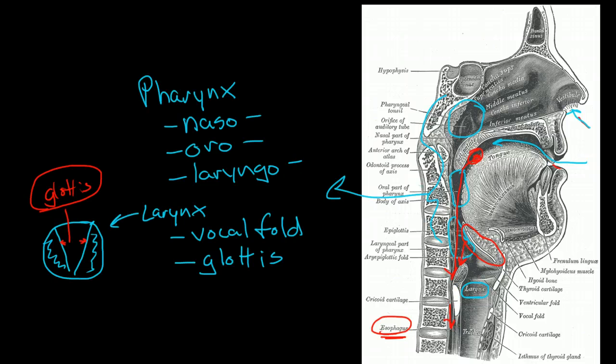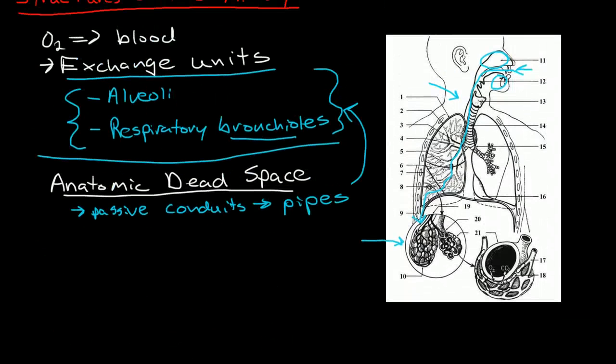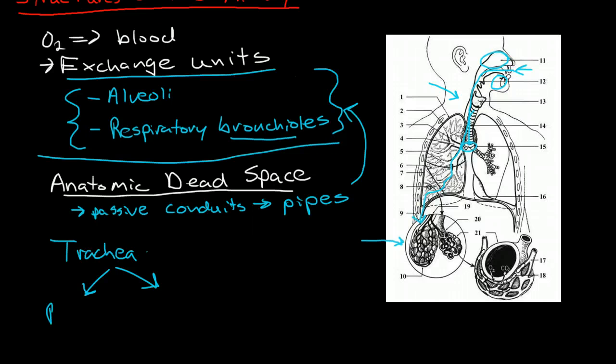Okay and then once we get past the larynx we are into the trachea. When we go through the trachea, the trachea bifurcates, splits into two. It splits into a right bronchus and a left bronchus. And the place that it splits off here is called the carina and that is an important structure to be aware of.